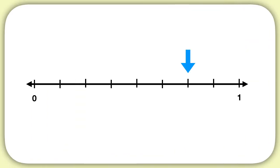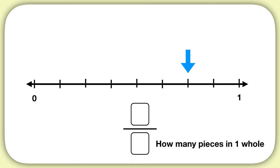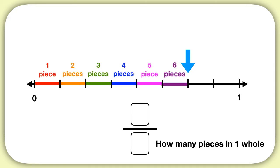Let's practice another problem together. Let's identify what this dash on the number line is. In my fraction, what should my denominator be? Remember, the denominator is how many pieces are in one whole. So we can count 1, 2, 3, 4, 5, 6, 7, 8 pieces between 0 and 1. Our denominator should be 8.